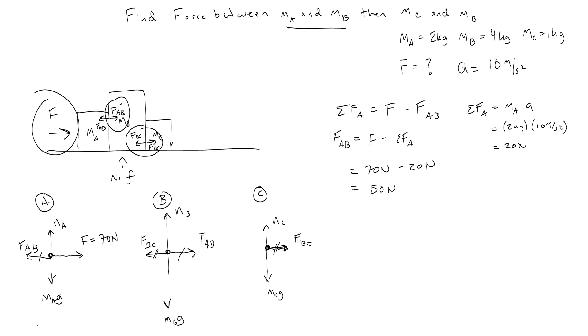Okay, now I can use that if I wanted to, to figure out what FBC is. Because I could write a net force equation for B, which would look like this. And I can always figure out what the net force on B is by taking the mass of B and multiplying it by the acceleration. So 4 kilograms times 10 meters per second squared gives me 40 newtons. So if I want to find FBC, I add it to both sides, take FAB, subtract the net force on B. And I would get 50 newtons minus 40 newtons, which is 10 newtons. So that's the force between MB and C.